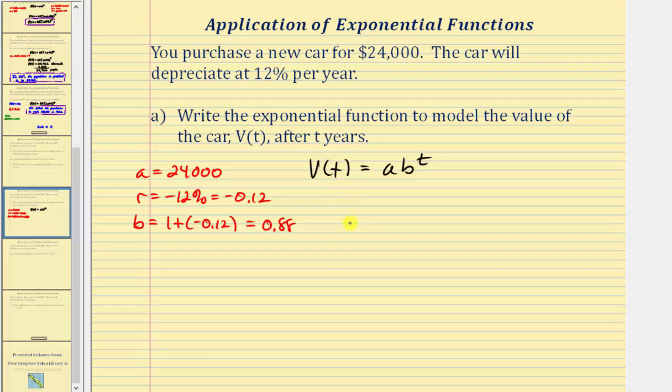Which means our function for the value of the car, V of t, is going to be equal to 24,000 times 0.88 raised to the power of t. Notice here the base is 0.88, which means we have exponential decay. Because the car loses 12% of its value each year, that means it retains 88% of its value, and that's why the base is 0.88.